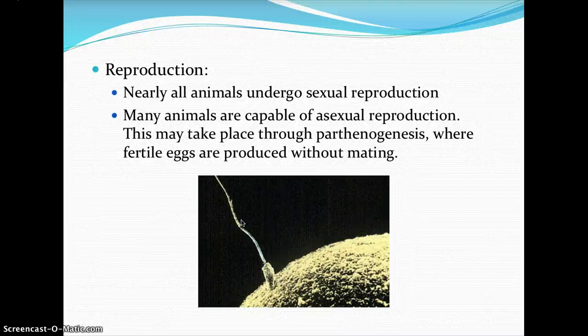Sexual reproduction is advantageous over asexual reproduction because the exchange of sperm and egg increases the genetic variability of the offspring, introducing new characteristics that can help organisms become better adapted to their environment over time — which we discussed in our adaptations lecture. Many animals are also capable of asexual reproduction through a process called parthenogenesis.